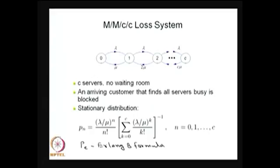Now I am moving to the fourth simple Markovian queuing model. After MMC-infinity, MM1N, and MMCK, I am now considering K equal to C — the loss system. It is not a queuing system because there are C servers and capacity is also C. An example is a parking lot with C spaces: if inter-arrival times and parking durations are both exponentially distributed, it can be modeled as an MMC loss system.